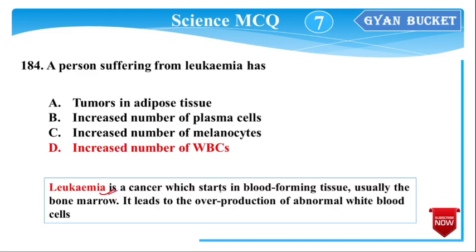Next question: Leukemia is a cancer which starts in blood-forming tissue, usually the bone marrow, with abnormal production and increase of cancer cells.